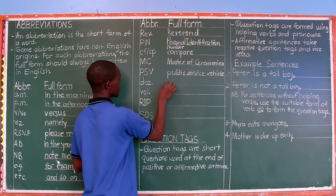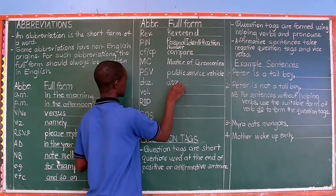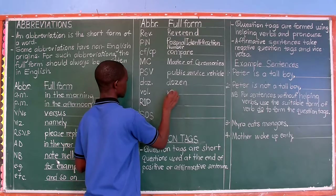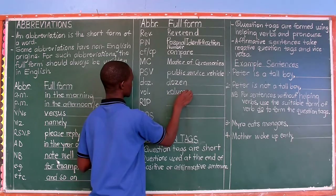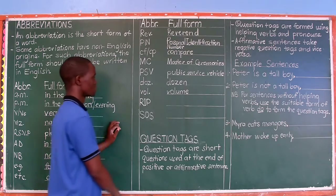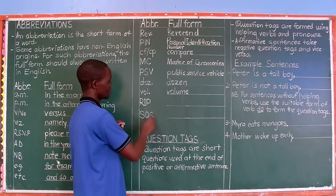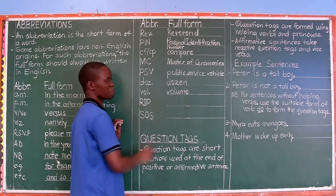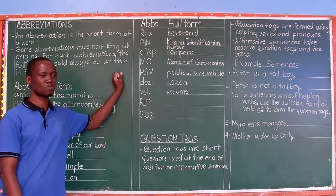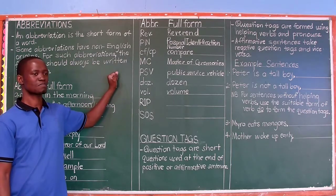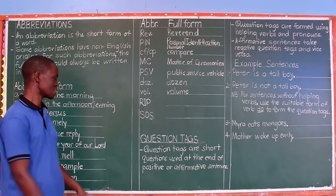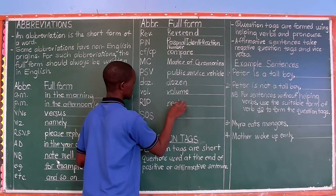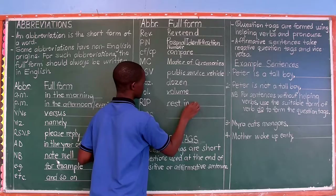Next is DOZ, which stands for 'dozen'. Then VOL, which changes to 'volume' — you will find this on your radio or remote control. Then RIP — you will find this written on graves and in announcements. RIP stands for 'rest in peace'.